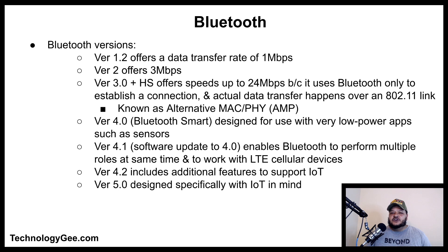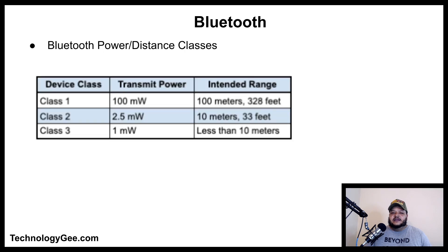Bluetooth version 1.2 offers 1 megabit per second. Version 2 offers 3 megabits per second. Version 3.0+HS offers up to 24 megabits per second by using Bluetooth to establish a connection while actual data transfer happens over an 802.11 link — a feature known as Alternate MAC/PHY (AMP). Version 4.0, known as Bluetooth Smart, is designed for low-power applications such as sensors. Version 4.1 enables multiple simultaneous roles and works with LTE. Version 4.2 adds features for IoT. Version 5.0 was designed specifically with IoT in mind.